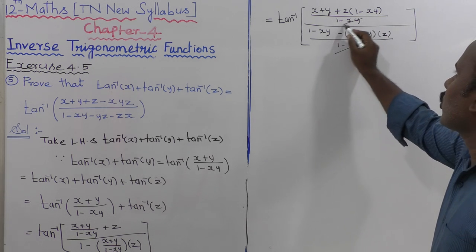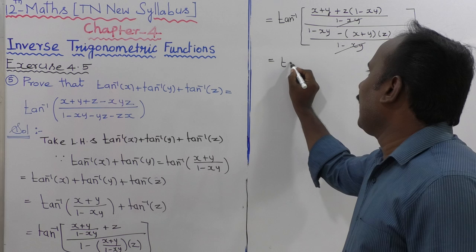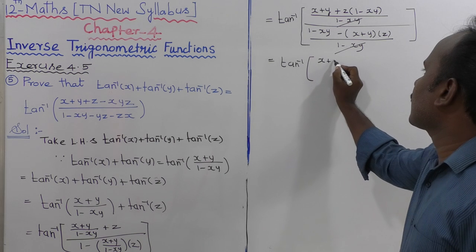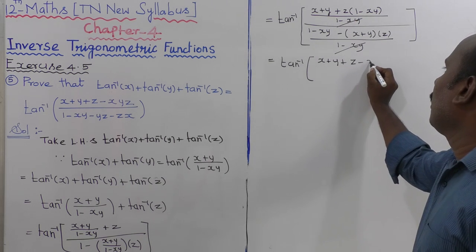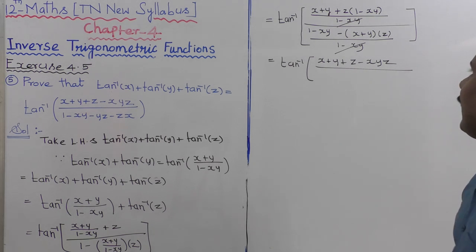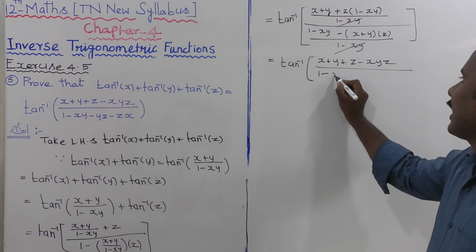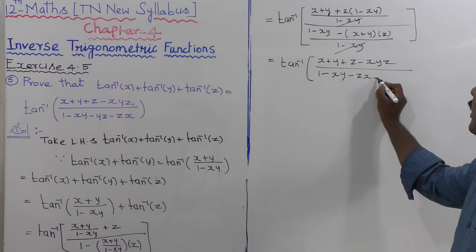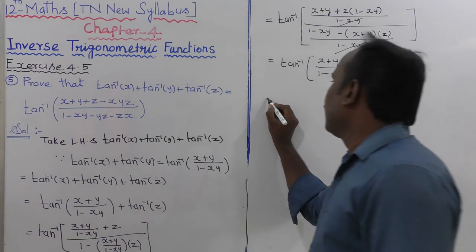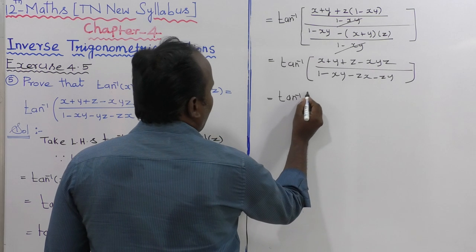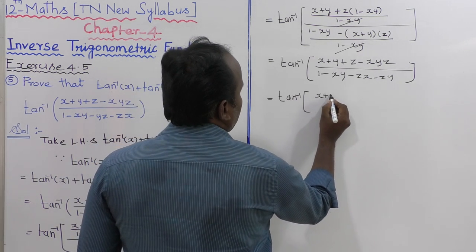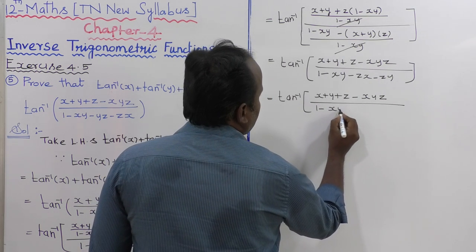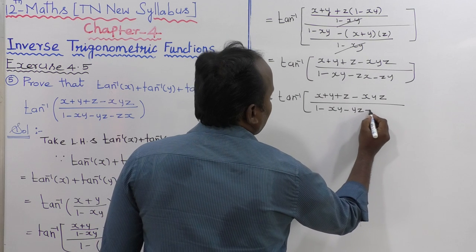The denominator cancels, and we get tan inverse of x plus y plus z minus xyz in the numerator. The denominator terms become 1 minus xy, minus yz, minus zx. So that equals tan inverse of x plus y plus z minus xyz, the whole divided by 1 minus xy minus yz minus zx.